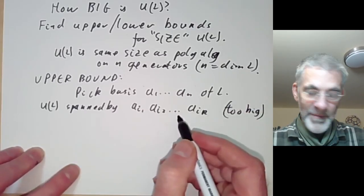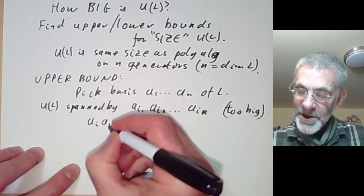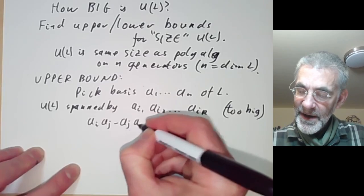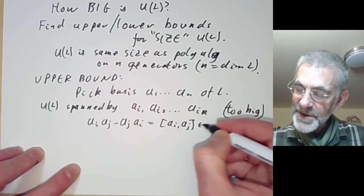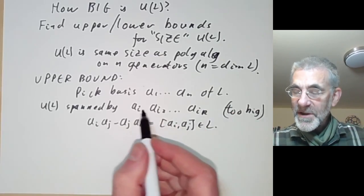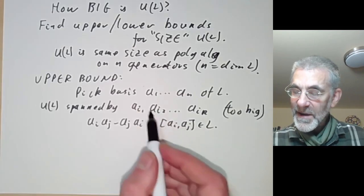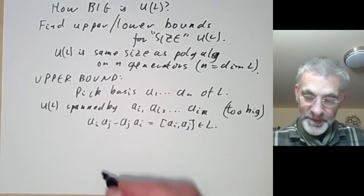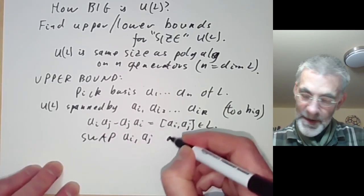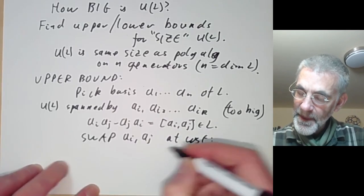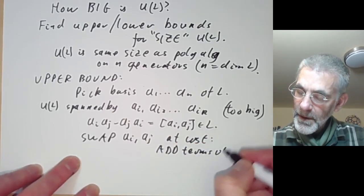We notice that aᵢaⱼ minus aⱼaᵢ equals [aᵢ, aⱼ], which is in L. So we can swap the orders of the aᵢ's at the cost of having something of lower degree. That is, we can swap aᵢ and aⱼ at the cost of adding terms of lower degree.